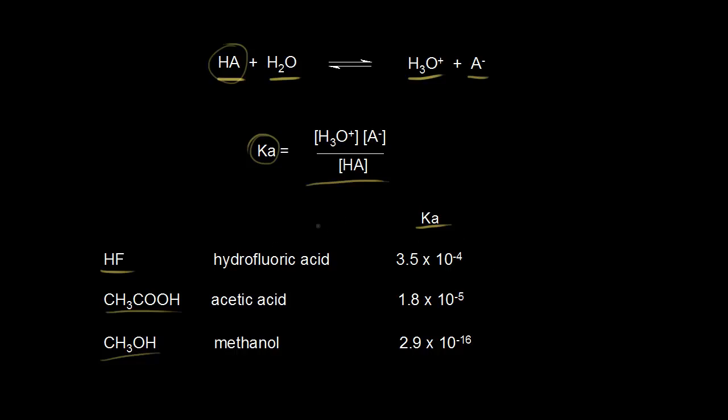So you can see that hydrofluoric acid has the largest KA value. So even though they're all considered to be weak acids, 3.5 times 10 to the negative four is larger than 1.8 times 10 to the negative five.